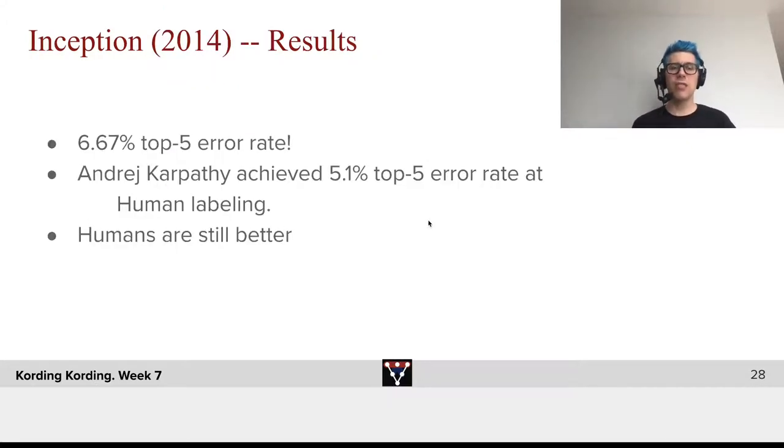What were the results? They get to 6.7% top-five error rate. That wasn't quite as good as humans, because Karpathy tried it and was able to do 5.1%, which is actually quite interesting. It requires considerable training of humans to get good at ImageNet. You need to train humans on ImageNet, which is quite interesting.